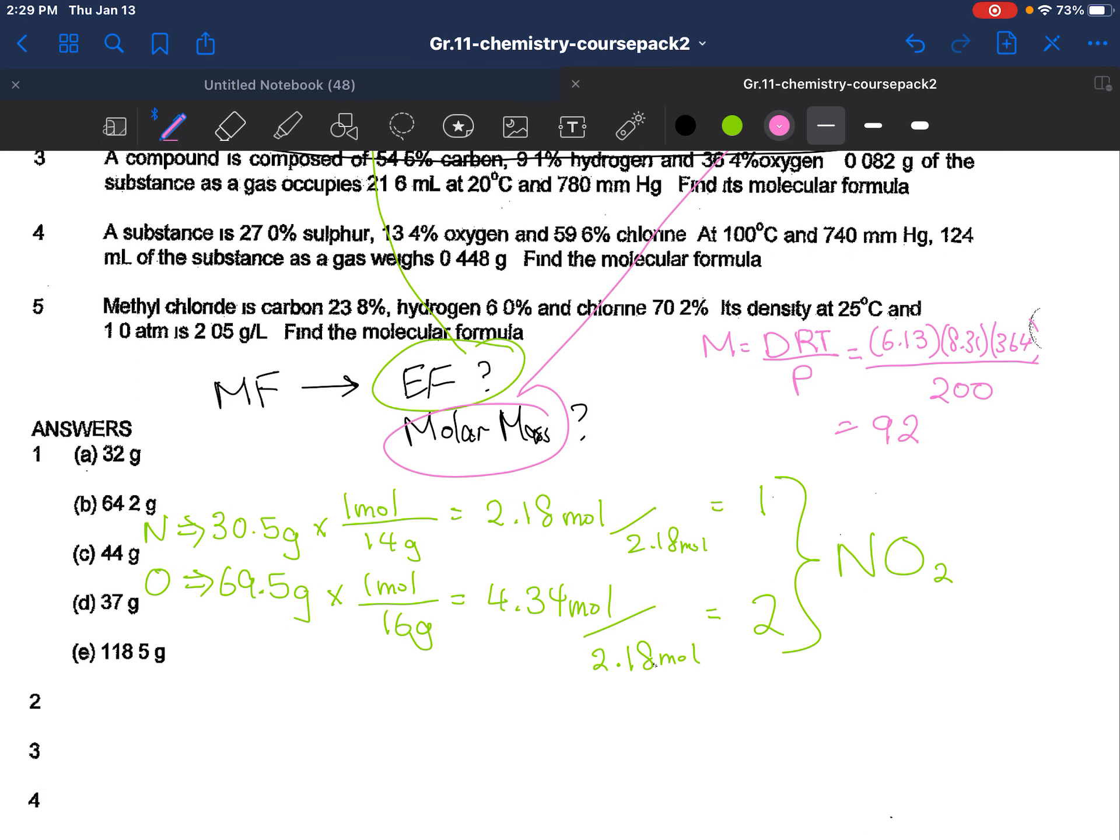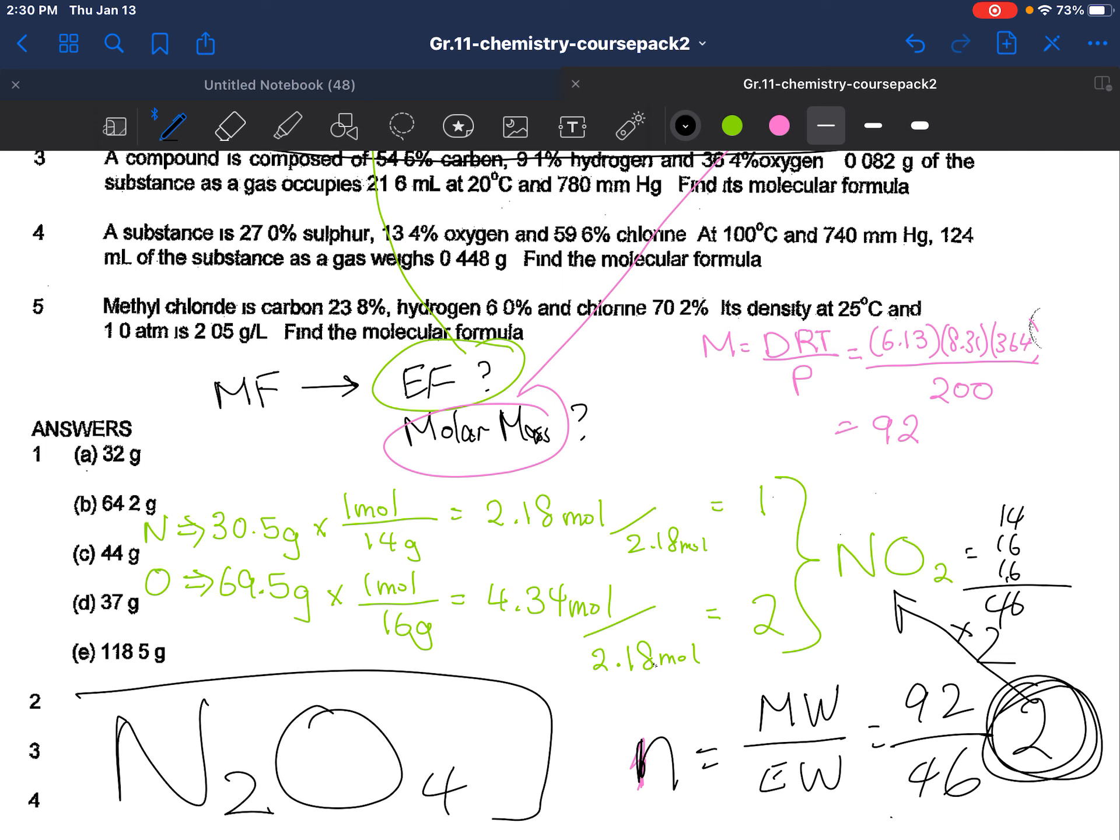So we have the molar mass. We have the empirical formula. Molecular formula is really just finding N. If you remember, N is equal to molecular weight over empirical weight. So the molecular weight is 92. The empirical weight right here, the empirical is 14, 16, 16. So you're looking at 46. So 92 divided by 46 is 2. So you're going to multiply 2 by this empirical formula. So your final answer is N2O4. Dinitrogen tetraoxide. Wow.